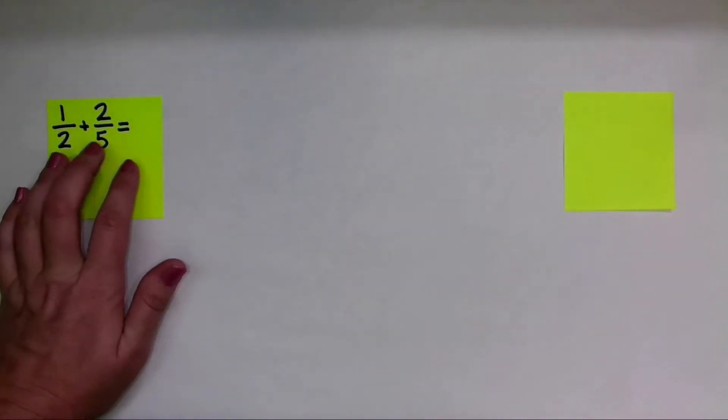So let me show you what this looks like with the fraction tiles. Now remember we're adding 1 half plus 2 fifths. So I have my fractions written right here.